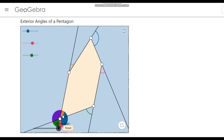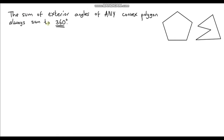The take-home from this is that it doesn't matter what polygon we've got — the exterior angles of that polygon will always sum to 360 degrees. So the first learning point is that the sum of exterior angles of any convex polygon always equals 360 degrees. I've specified convex polygon because this is a concave polygon here, and it does not work for these types of shapes — only convex polygons.